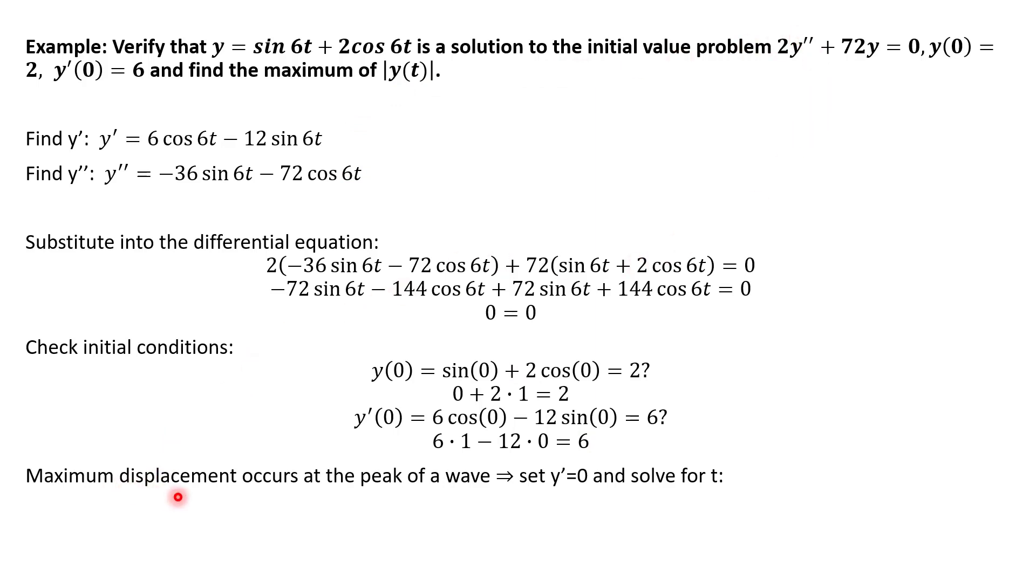And now let's find the maximum displacement of our mass on our spring. And so this actually occurs at the peak of a wave. If you were to graph the motion of the mass on the spring, it would look like a sine wave. And so the maximum displacement from the equilibrium point occurs anytime you're at the peak of a wave. And so then if you think about that, that means your first derivative is 0. Let me draw this out really quick. If you think about the fact, at the peak of a wave, you have a horizontal tangent line right there. But that's why the derivative is 0.